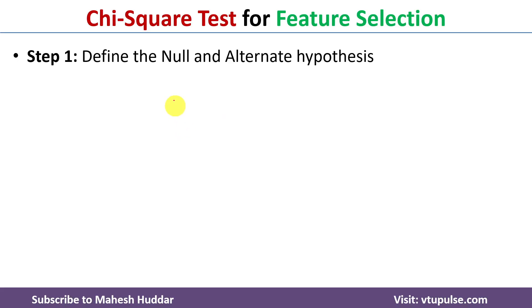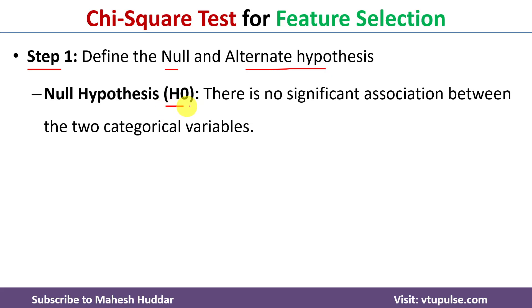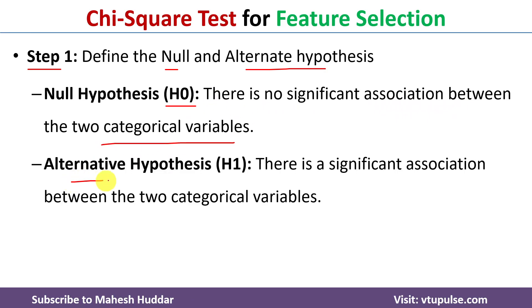Now we will discuss how chi-square test is used for feature selection in machine learning. In the first step, we need to define the null and alternate hypothesis. The null hypothesis H0 is: there is no significant association or correlation between the two categorical variables. The alternate hypothesis H1 is: there is a significant association or correlation between the two categorical variables. We need to check whether H0 is accepted or H1 is accepted.